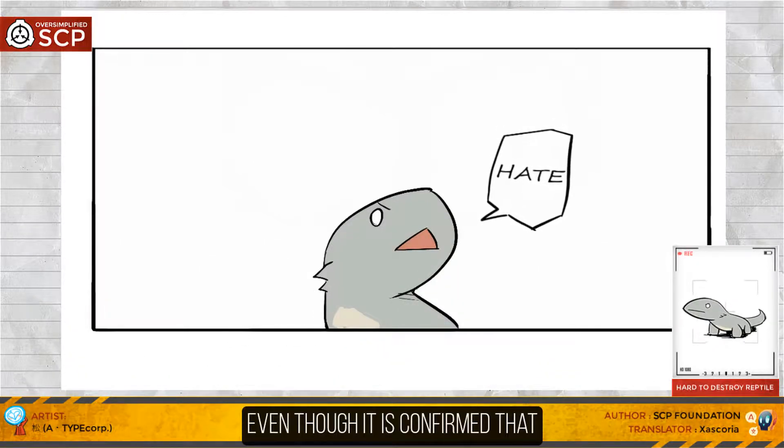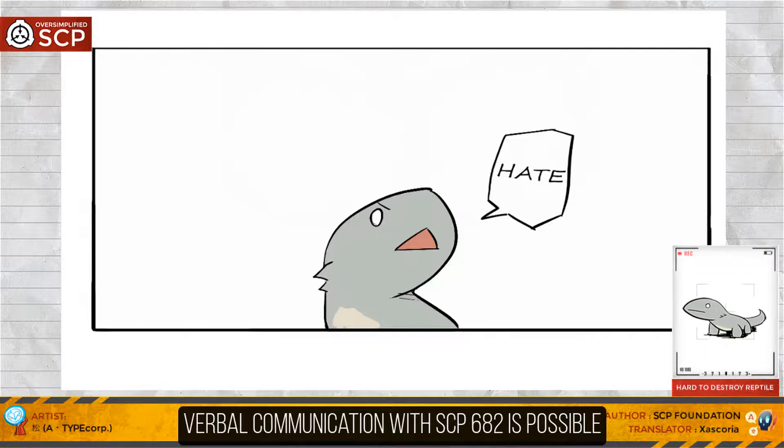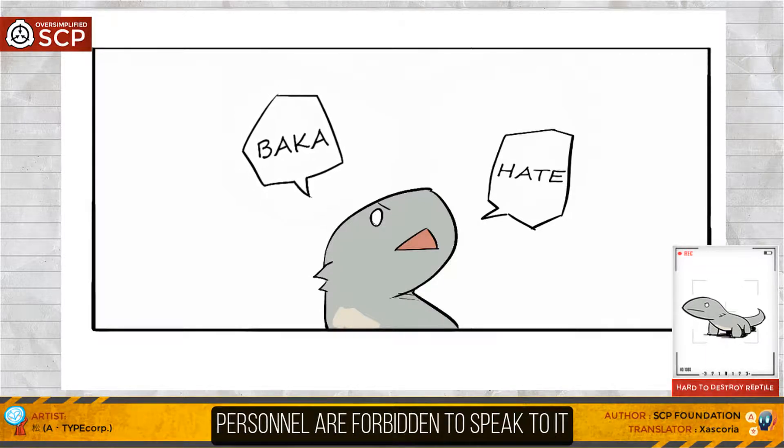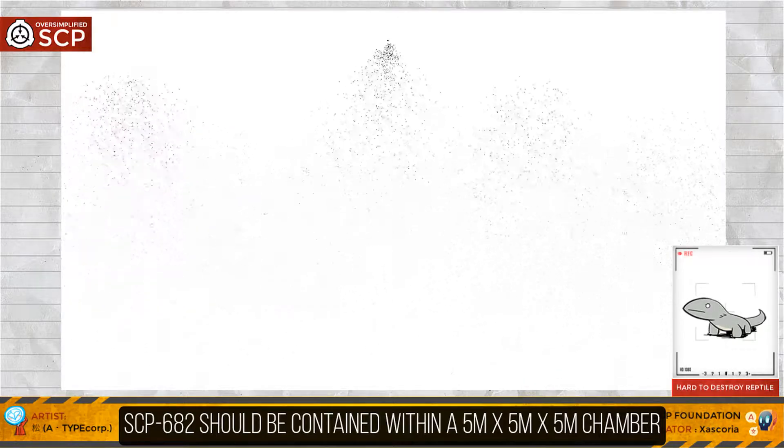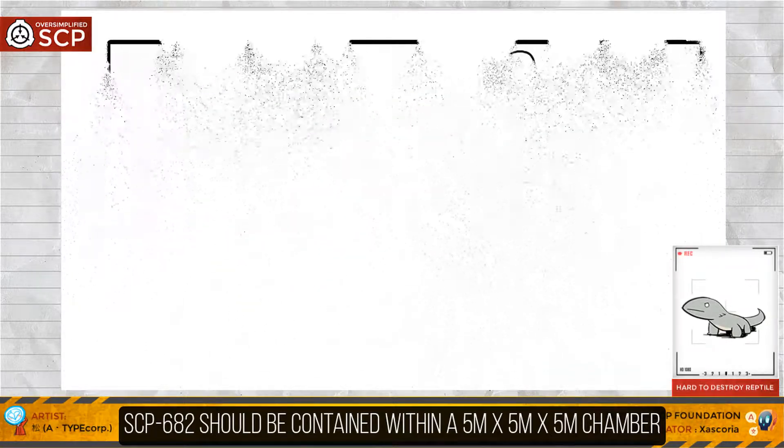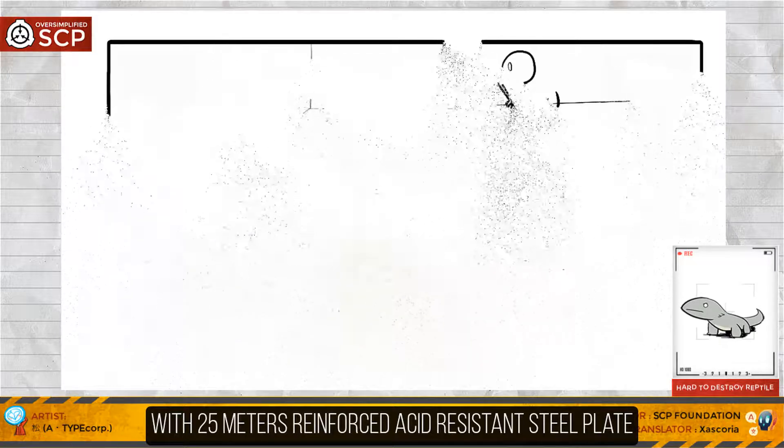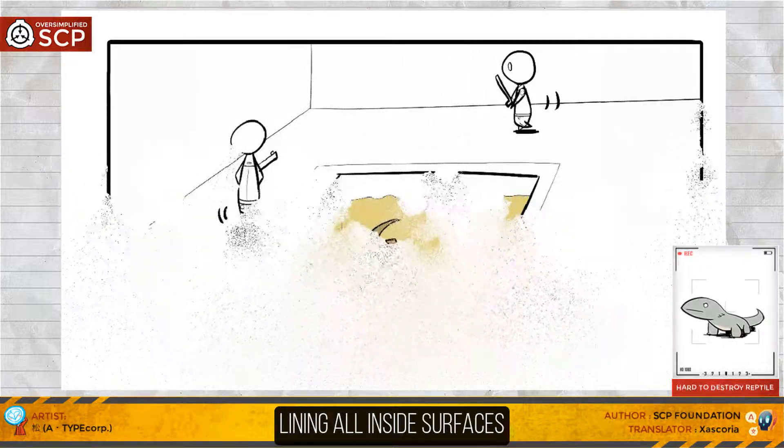Even though it is confirmed that verbal communication with SCP-682 is possible, personnel are forbidden to speak to it. SCP-682 should be contained within a 5m by 5m by 5m chamber, with 25m reinforced acid-resistant steel plate lining all inside surfaces.